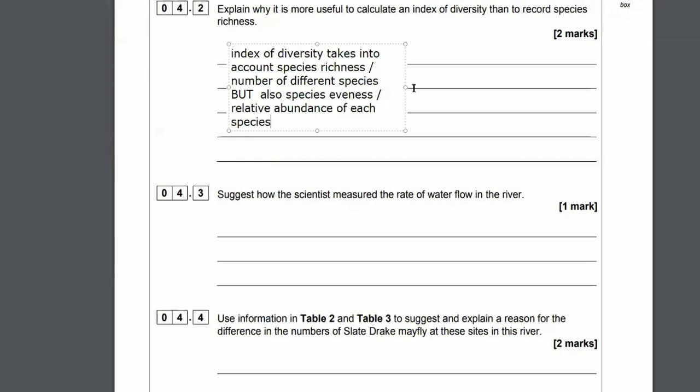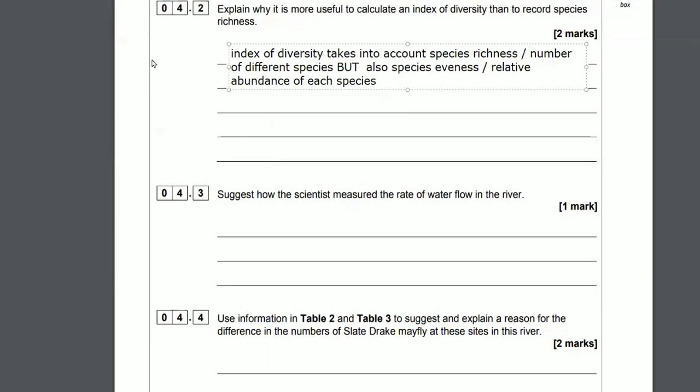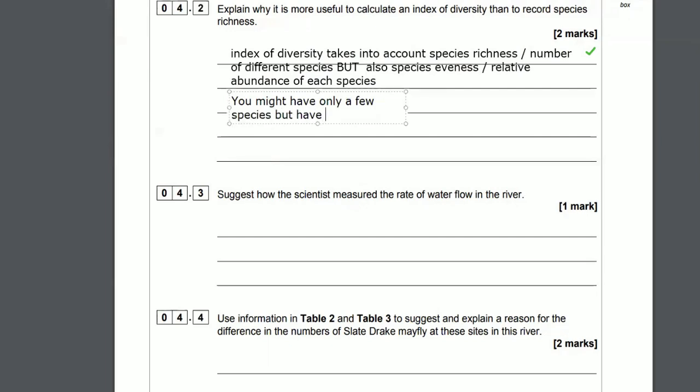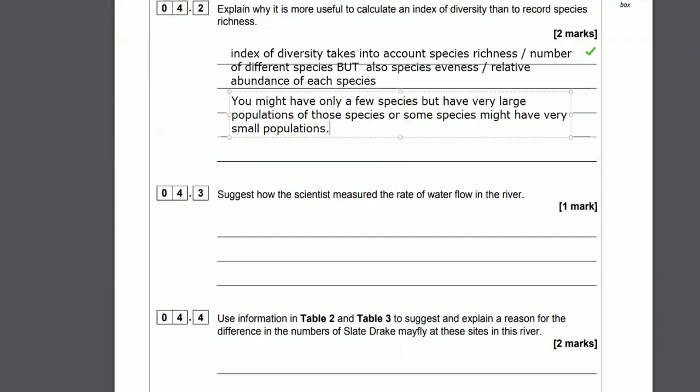You might have field A and field B. Field A might have five species, but they only have 10 of one species and then one of four other species. Field B might only have three species, so two less species, but they have 30 of each species. Which one is more biodiverse? We can't really say field A's more biodiverse. It's only got one member of each species. What we're doing is taking into account not just the number of species, but the relative abundance as well. This takes into account whether you have a couple of really large populations or some really small populations, and that all contributes to the overall index of diversity. The higher the index of diversity gives us an idea of the area that is more biodiverse and more likely to survive drastic changes to that environment.